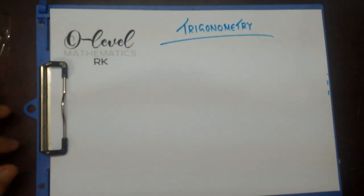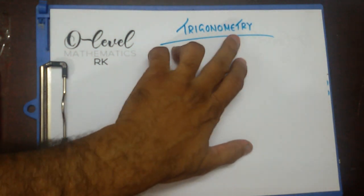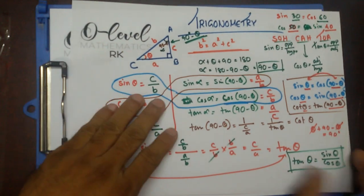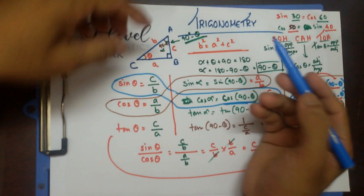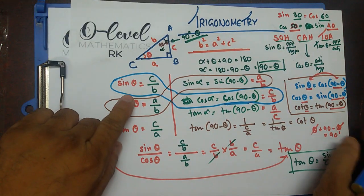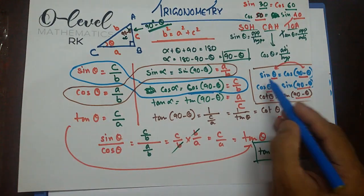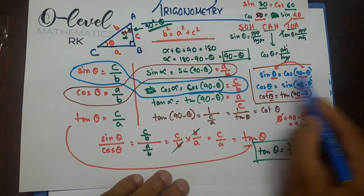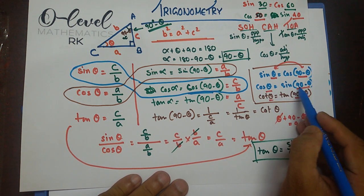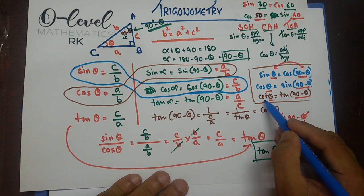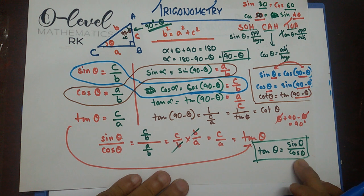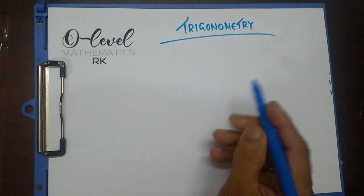Good morning students. Welcome to the trigonometry video number two. In my last video I showed you that by Pythagoras theorem we can say hypotenuse squared equals the sum of the other two sides squared. Then we showed sin theta equals cos(90 minus theta) — they are complementary angles. Cos theta equals sin(90 minus theta), and cot theta equals tan(90 minus theta), and tan theta equals sin theta by cos theta. Now what are we going to do today?